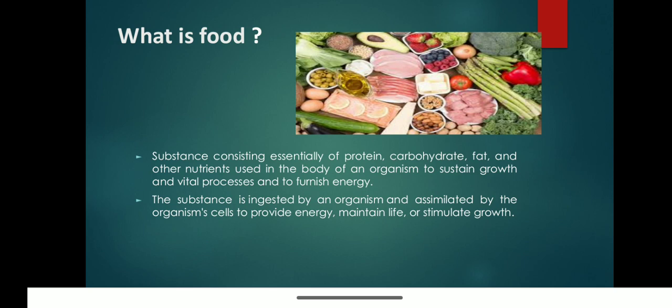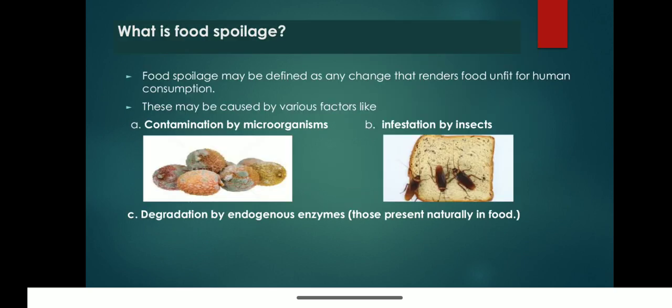Now as we deal with food, a serious problem lies with its spoilage. Since the human food supply consists basically of plants and animals or products derived from them, it is understandable that our food supply can contain microorganisms in interaction with the food. Food spoilage may be defined as any change that renders food unfit for human consumption.